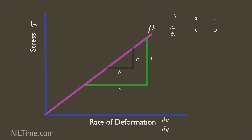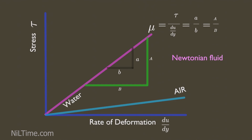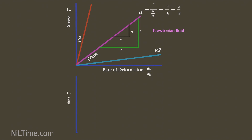Fluids for which the rate of deformation is linearly proportional to the shear stress are called Newtonian fluids. This is the plot of viscosity of water at 20 degrees Celsius. Most common fluids such as water, air, gasoline, and oils are Newtonian fluids. Remember, for water or Newtonian fluids, viscosity is always linear no matter what. But for solids such as steel, modulus of rigidity is not linear forever — there comes a point where Hooke's law no longer applies.